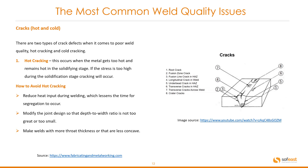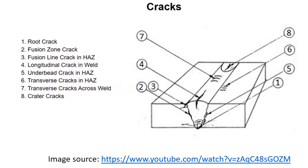There are two types of crack defects when it comes to poor weld quality: hot cracking and cold cracking. Hot cracking occurs when the metal gets too hot and remains hot in the solidifying stage — if the stress is too high during solidification, cracking will occur. To avoid hot cracking, reduce the heat input during welding to lessen the time for segregation to occur, modify the joint design so the depth-to-width ratio is not too great or too small, and make welds with more throat thickness or that are less concave. This image on the right shows various stages and placements where cracks could occur.